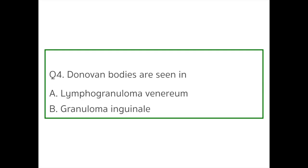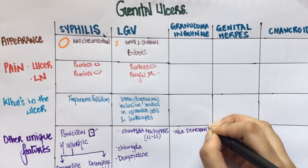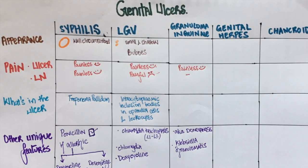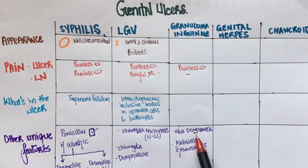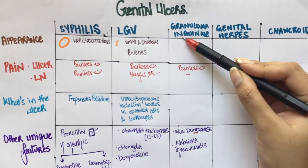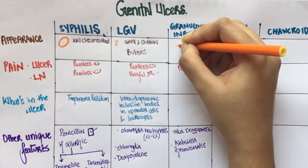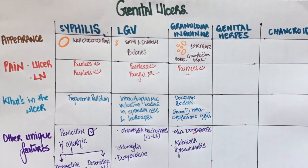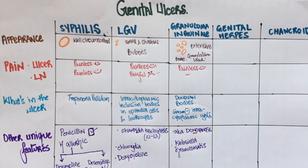Question number four: Donovan bodies are seen in — Option A: Lymphogranuloma venereum, Option B: Granuloma inguinale. The answer is Granuloma inguinale, also known as Donovanosis, caused by Klebsiella granulomatis. What's unique about this is that the ulcer is painless and there is no lymphadenopathy. Here's how I remember it: Donovanosis has no lymphadenopathy, and Granuloma inguinale has no inguinal lymphadenopathy. The base of these ulcers might have granulation tissue. Donovan bodies are gram-negative intracytoplasmic cysts seen in the lesion. Granuloma inguinale is treated with doxycycline.